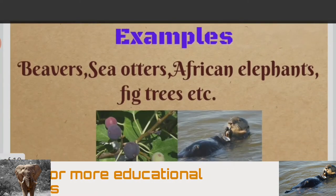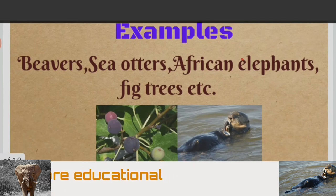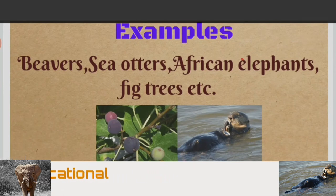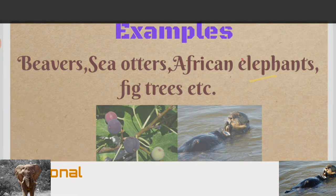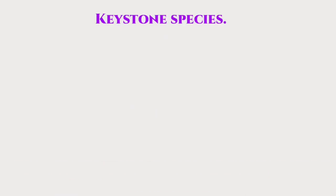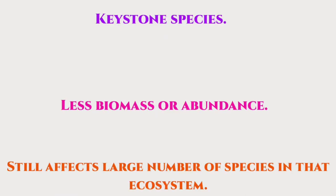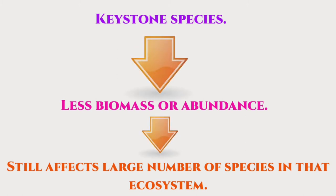Examples of keystone species include beavers, sea otters, African elephants, and fig trees. A major characteristic feature is that a keystone species has an impact on many others, often far beyond what might have been expected from a consideration of their biomass or abundance.